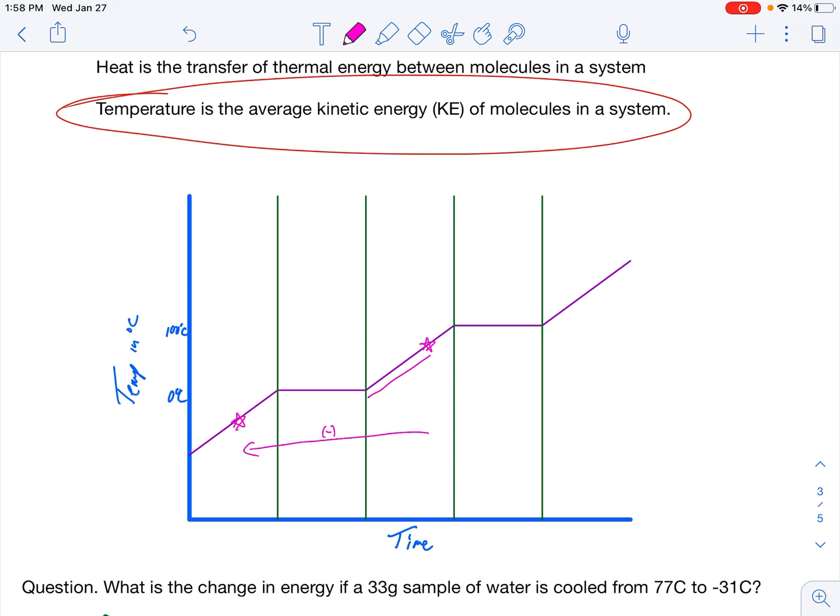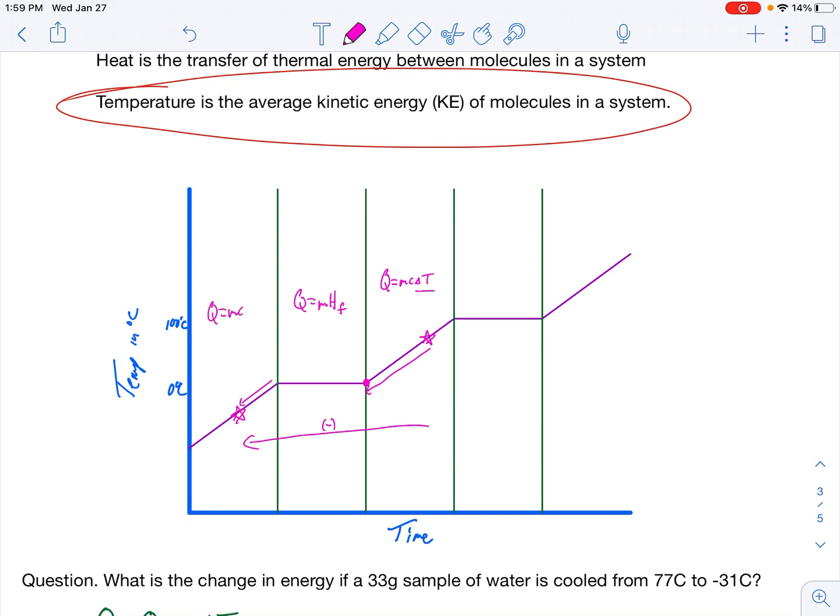Now, my first little part here is going from this star, and I run into this line right here, zero degrees Celsius. So for my Q equals mc delta t here, my change in temperature is only going to be to zero degrees Celsius. My next part, I'm going to have Q equals mHf. That's how I'm going to be calculating the amount of energy that it took to actually change phase. And finally, I'm going to be starting at zero and then going all the way down to -31 degrees Celsius. That's going to be my Q equals mc delta t part of that.